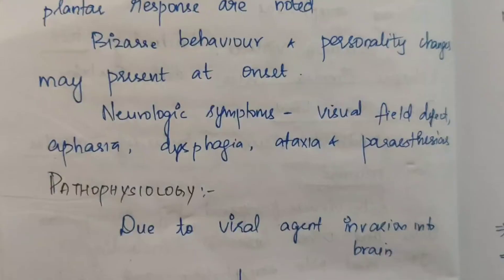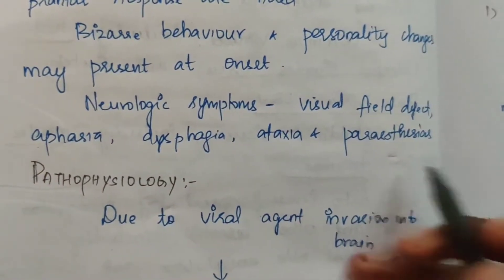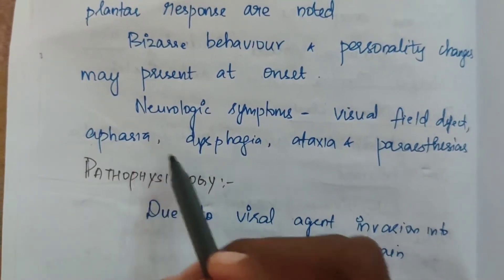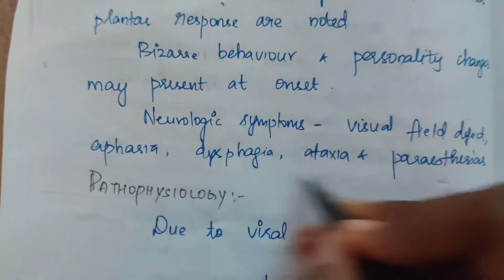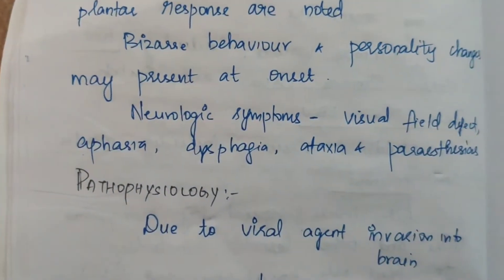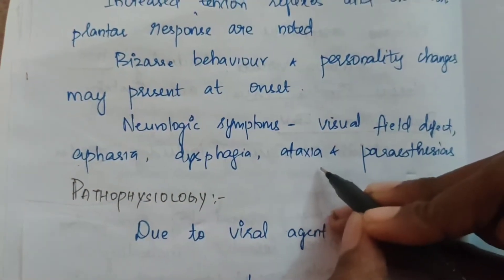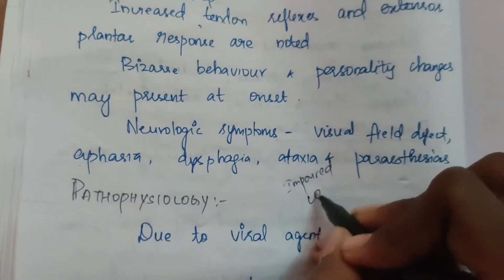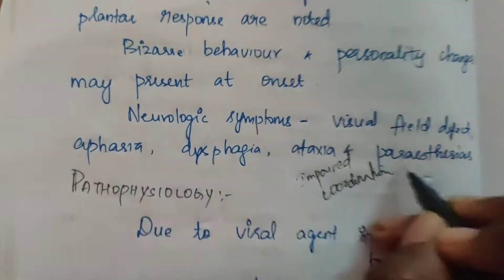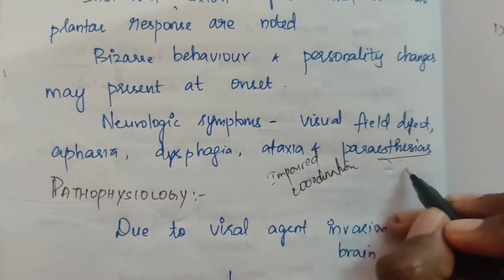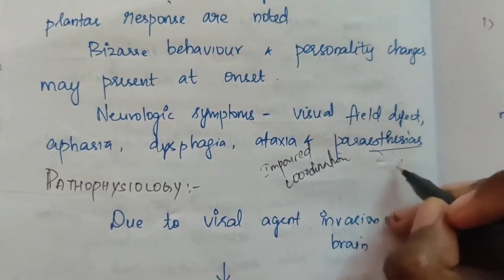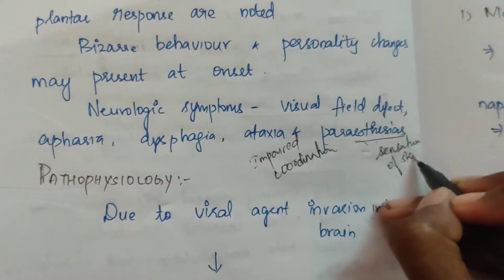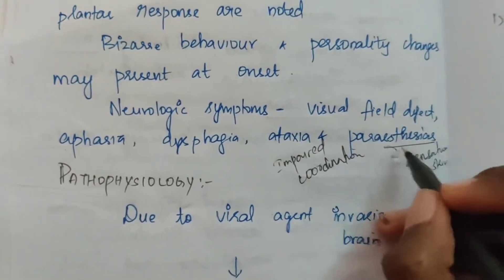Additional neurological symptoms include ataxia — impaired coordination — and paresthesia, which is a prickling or different sensation on the skin. Aphasia involves difficulty in framing words.